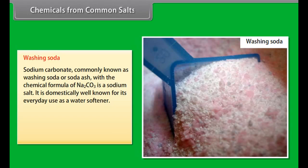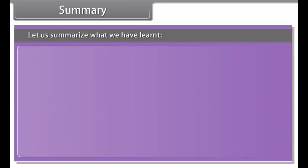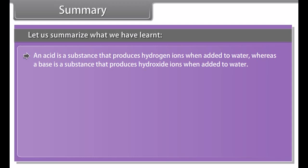Chemicals from common salts. The following are some of the chemicals produced from salts. Common salt. Common salt with the chemical name of sodium chloride is an ionic compound with the formula NaCl. It is responsible for the salinity of the ocean. It is commonly used as a condiment and food preservative since it is the major ingredient in edible salt.